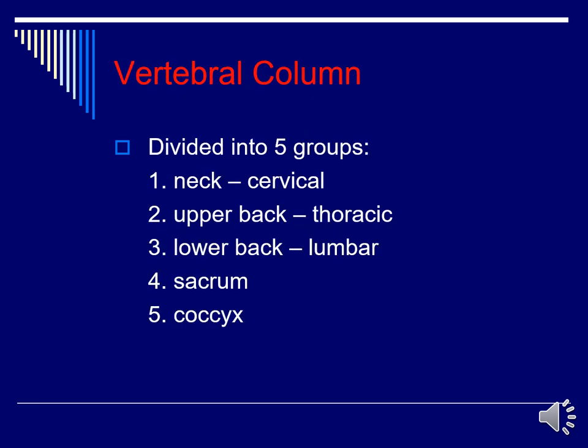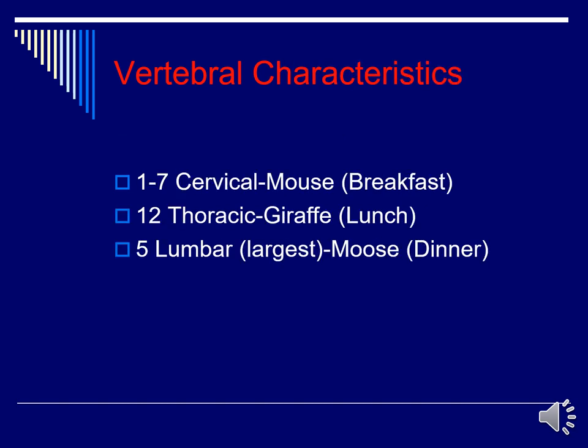The vertebral column is divided into five groups: the cervical, the thoracic, the lumbar, the sacrum, and the coccyx. Remember that we have seven cervical vertebrae, 12 thoracic vertebrae, and five lumbar vertebrae.